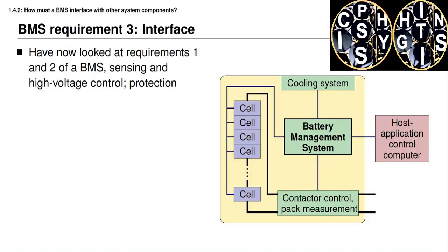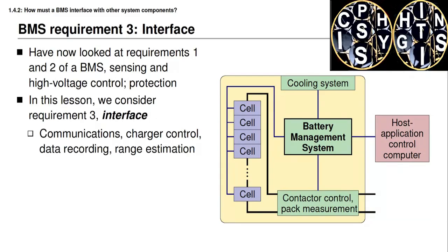Last week and so far this week you've learned about requirements 1 and 2 of a battery management system, which have to do with sensing and high voltage control and protection. In this lesson we're going to consider requirement 3, which has to do with the interface between the battery management system and the host application. This includes the communications itself, controlling a charger, data recording for diagnostics purposes, and auxiliary tasks such as range estimation.